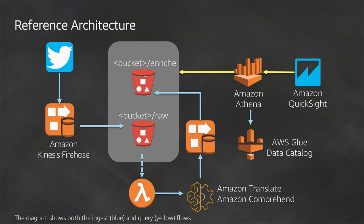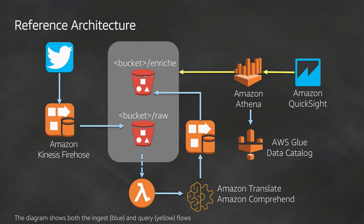We recently released a feature called Enhanced Fan-Out for Kinesis Data Streams. It lets you use an HTTP/2 interface — a binary wrapper around regular HTTP that allows multiplexed TCP connections — which provides a subscribe-to-shard API so the server can push packets without you having to request them. That's really useful in a streaming scenario. Blog post about it coming out tomorrow.